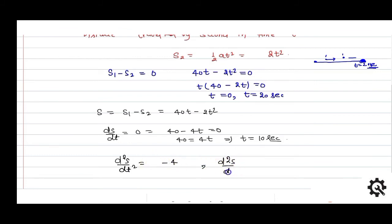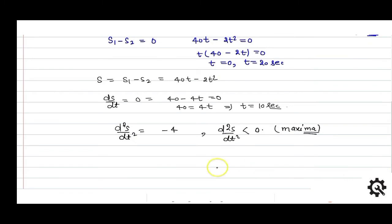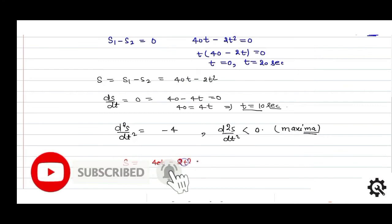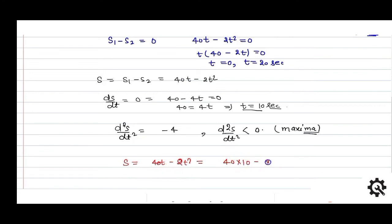Between S1 and S2, we get maximum distance at t equals 10 seconds. Substituting: S equals 40t minus 2t squared with t equals 10 gives 40 times 10 minus 2 times 100, which equals 400 minus 200 equals 200 meters.